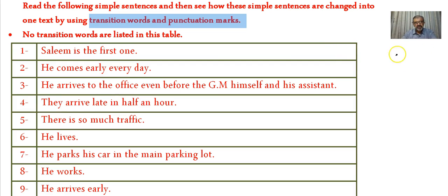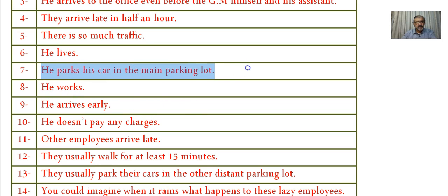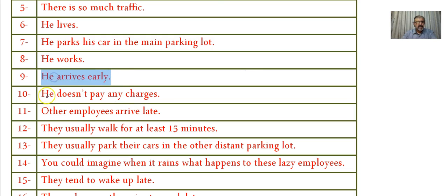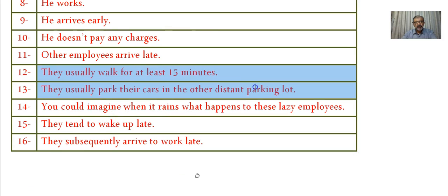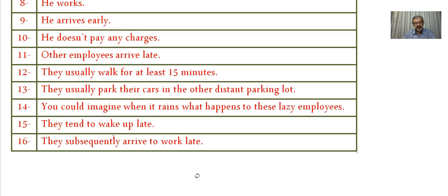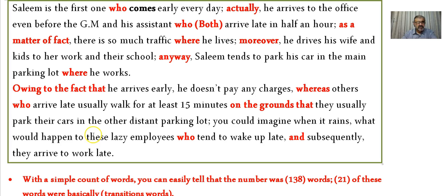The 16 simple sentences are: Salim is the first one. He comes early every day. He arrives to the office even before the GM himself and his assistant. They — the GM and his assistant — arrive late, in half an hour. There is so much traffic where he lives. He parks his car in the main parking lot where he works. He arrives early; he doesn't pay any charges. Other employees arrive late; they usually walk for at least 15 minutes. They usually park their cars in the other distant parking lot. You could imagine what happens when it rains. They tend to wake up late; they subsequently arrive to work late.